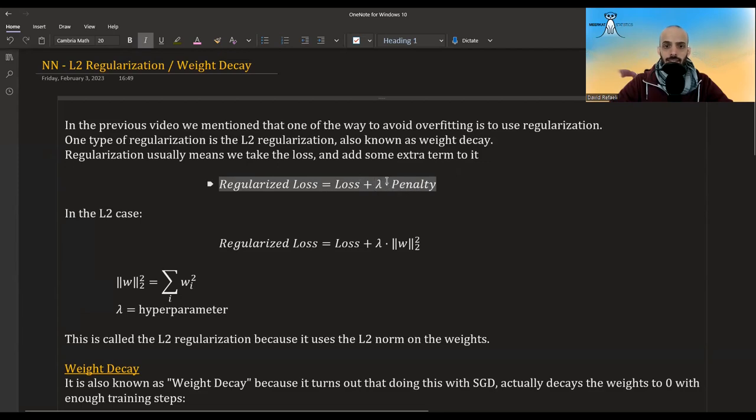the less the penalty has an effect over the overall loss. In the L2 case, the penalty is just the L2 norm of the weights of the neural networks, the squared L2 norm. You take all the weights of the neural networks, square them, and add them up.